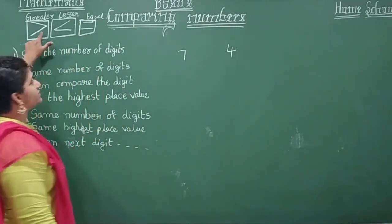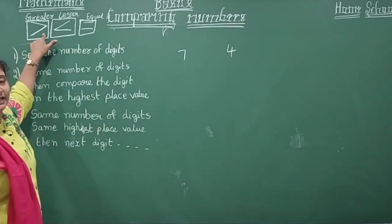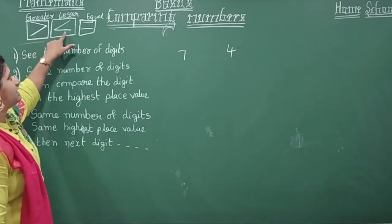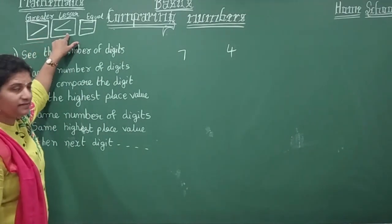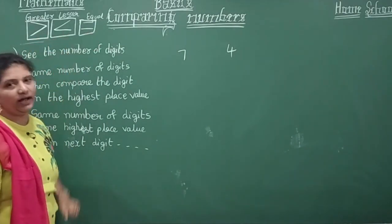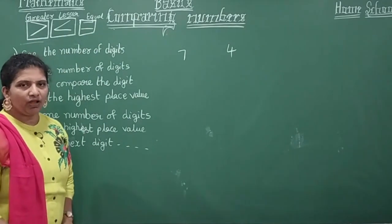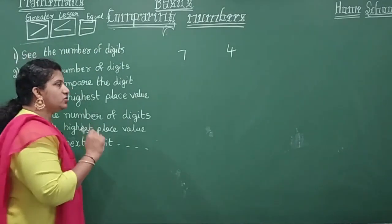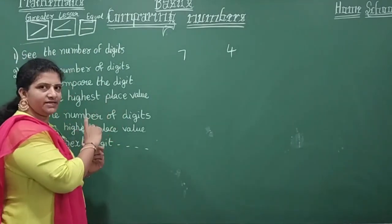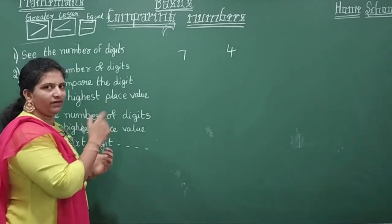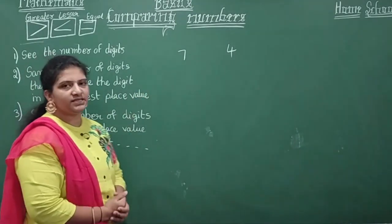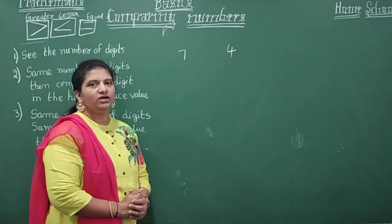So how do you write that using a symbol? We are going to learn in this class. Look here — this is your greater than symbol, this is the lesser than symbol, and this is the equal to symbol. We are going to have some rules, which we will discuss. First, let's see some numbers.